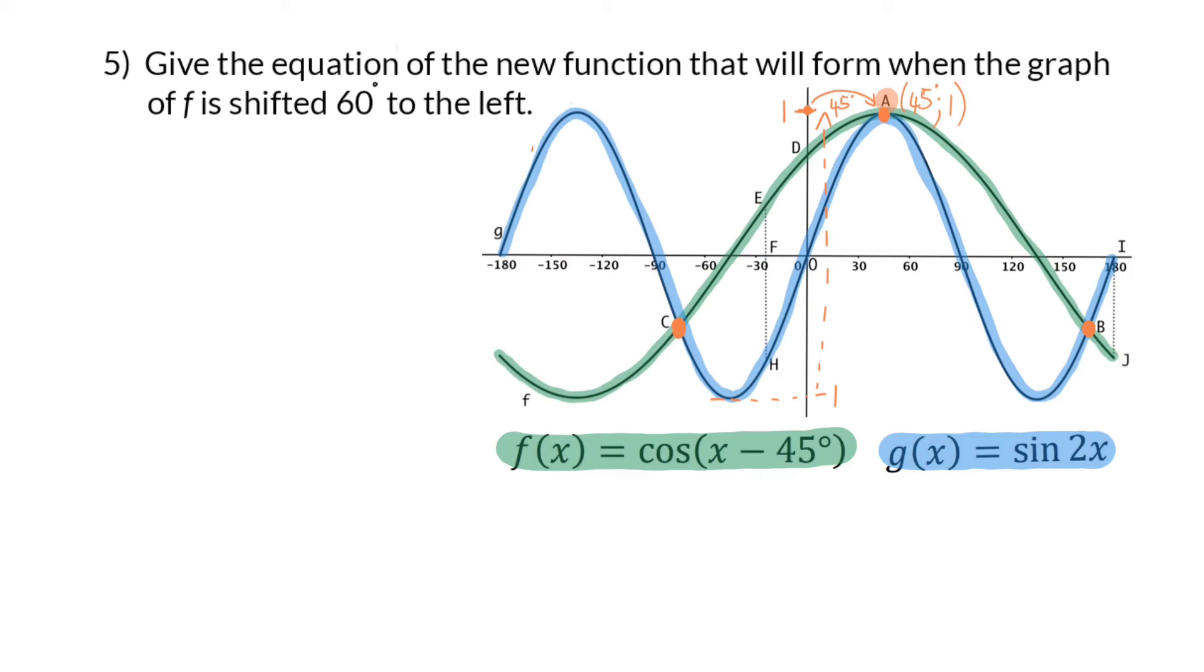Question 5: Give the equation of the new function that will form when the graph of f is shifted 60 degrees to the left. When a graph shifts to the left, it shifts in the negative direction. But we've seen that for horizontal shifts, the sign of the shift is the opposite of the direction it moves in. This means to move in the negative direction, we are going to add 60 degrees. So, if we want to determine the equation of the new function that forms, we need to take the original function of cos of x minus 45 and add 60 degrees to that. Therefore, the equation of the new function will be cos of x plus 15 degrees.